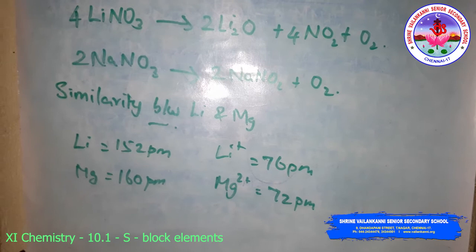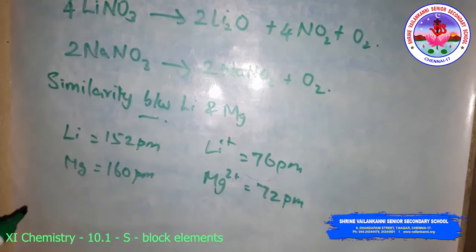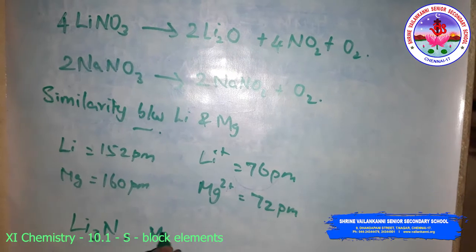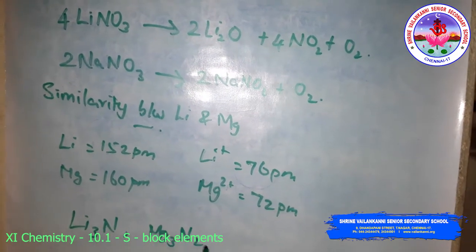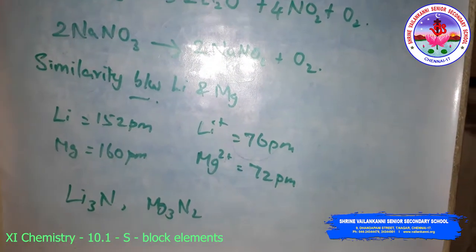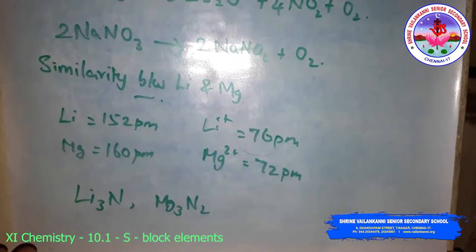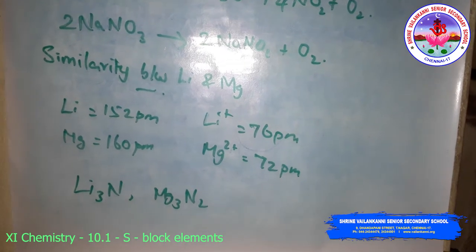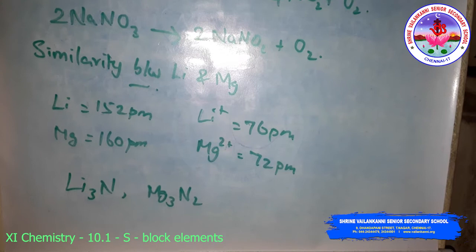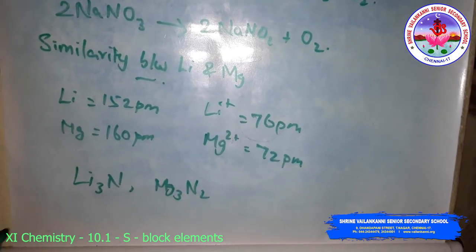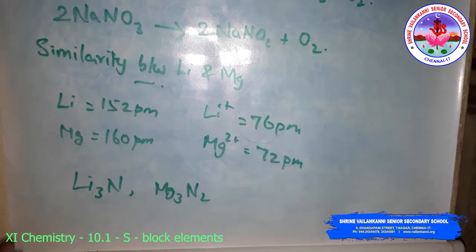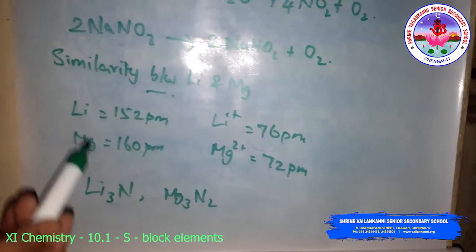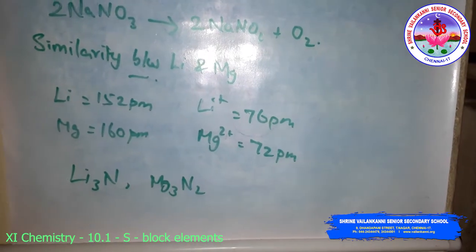Both lithium and magnesium form nitrides — lithium nitride Li3N and magnesium nitride Mg3N2 — by direct combination with nitrogen. The oxides Li2O and MgO do not combine with excess oxygen to give any superoxide. The carbonates of lithium and magnesium decompose easily on heating to form oxides and carbon dioxide. Solid hydrogen carbonates are not formed by either lithium or magnesium. Both lithium chloride and magnesium chloride are soluble in ethanol, deliquescent, and crystallize from aqueous solution as hydrates.